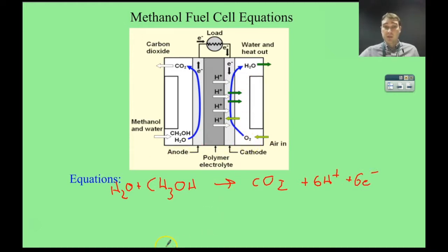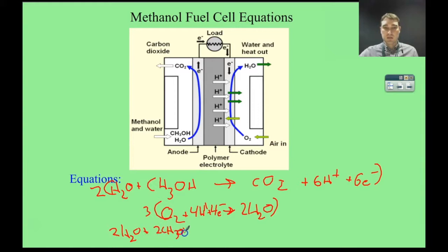On the other side we've got oxygen producing water. So O2 goes to H2O, which is very similar to what we had before. Oxygen plus water, we're going to need two of those. We're going to get plus four hydrogen ions and four electrons. So multiplying the top by two and the bottom one by three. So we've got two waters plus two methanol, plus three oxygens, plus 12 hydrogens, plus 12 electrons.